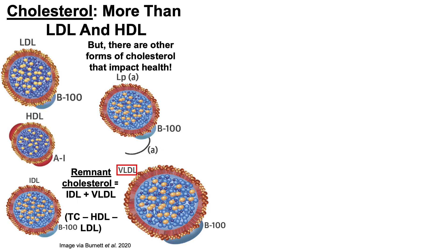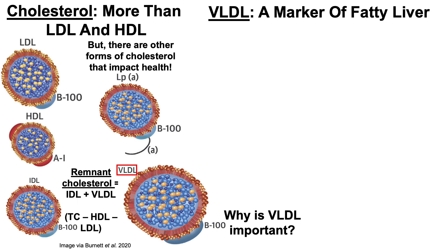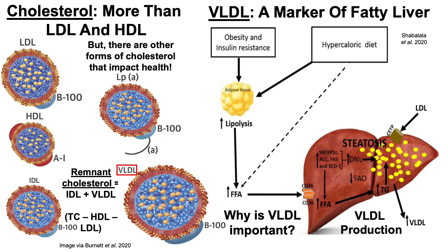In this video, I'm going to talk about VLDL. Why is VLDL important? First, it's a marker of fatty liver. In the situation where there's obesity, insulin resistance, and/or a hypercaloric diet, these situations trigger an increase in lipolysis — fat breakdown in adipose tissue — which leads to systemic increases in free fatty acids (FFAs). A hypercaloric diet on its own can also induce increases in circulating levels of free fatty acids. Increased circulating FFAs are then taken up by the liver, where they are packaged into triglycerides (TGs).